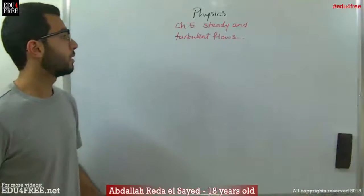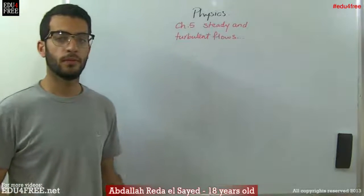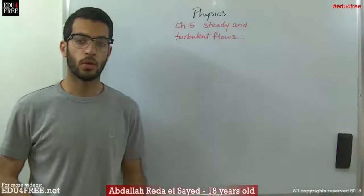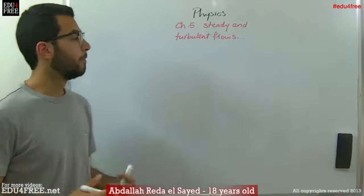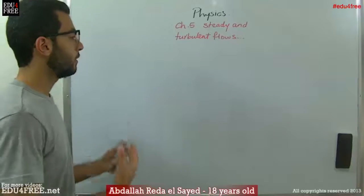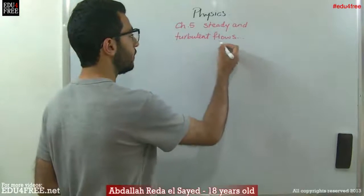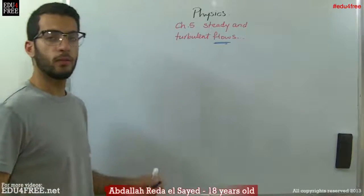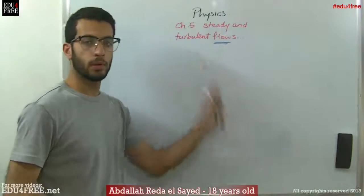Today we are going to talk about steady and turbulent flows, at the beginning of chapter 5 in physics. This chapter is called hydrodynamics, and here we are dealing with fluids in motion — liquids that move. The motion of liquids is called a flow, and flows have two types: steady flows and turbulent flows.